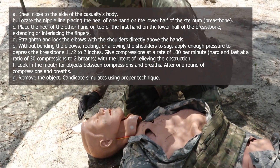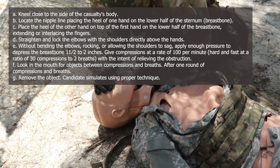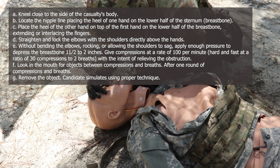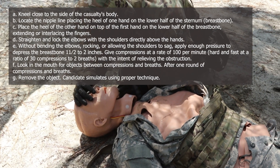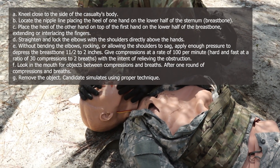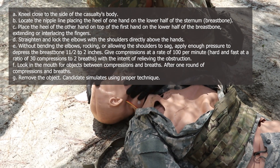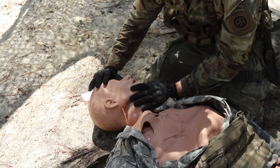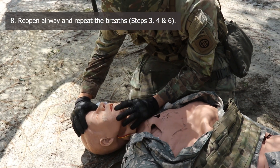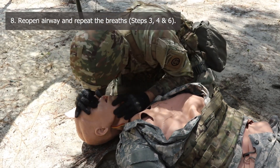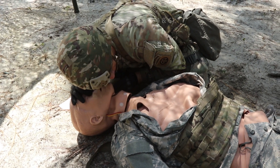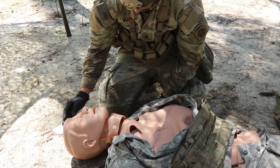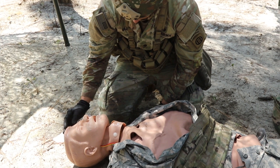After 30 compressions have elapsed, look in the mouth for objects between compressions and breaths. After one round of compressions and breaths, the grader will state you see an object in the casualty's mouth. Remove the object — the candidate simulates using proper technique. Reopen the airway and repeat the breaths. The grader will state you see the chest rise and fall with your breaths, but the casualty is still not breathing.